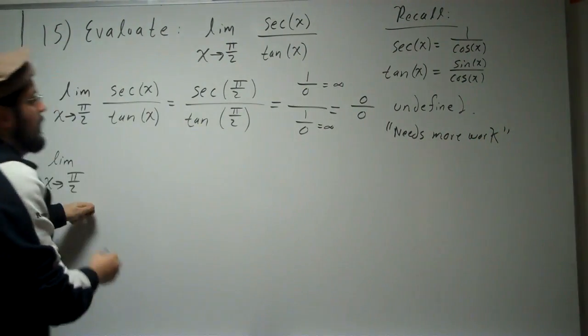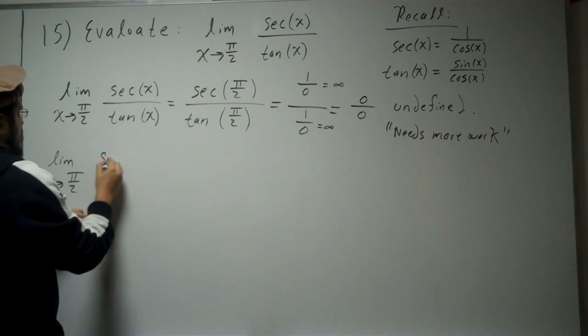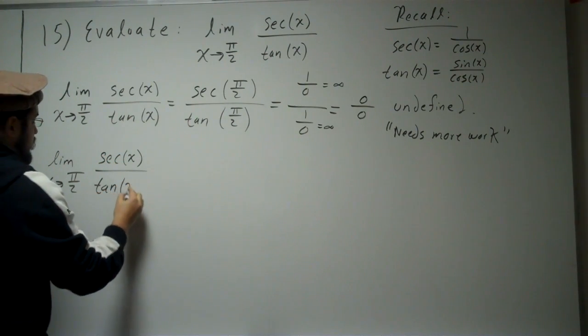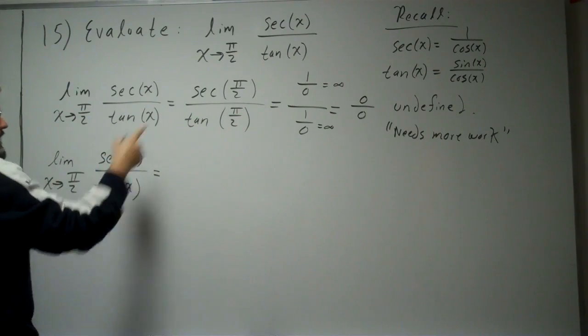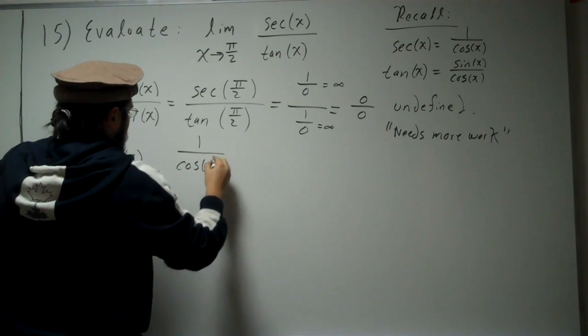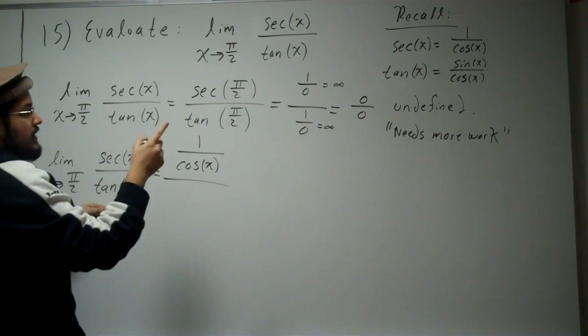Alright, so that's how we go over here. Secant, I want to just rewrite this, and then we'll go ahead and do some algebra. Okay, so we said secant is 1 over cosine, 1 divided by cosine, and tangent is sine divided by cosine.